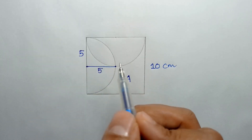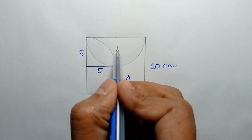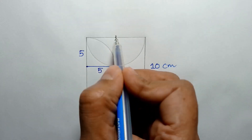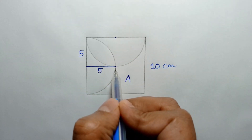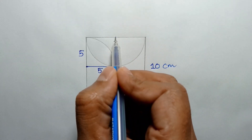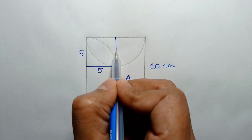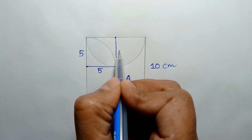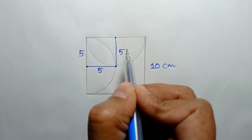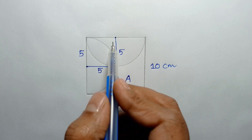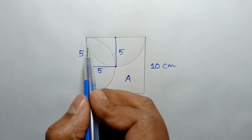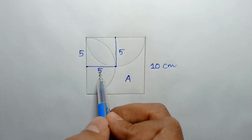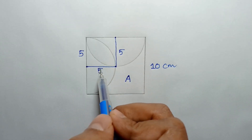Similarly, the midpoint of this side and the intersecting point — joining these two points, it will also be 5 centimeters. So this is a square of side 5 centimeters.